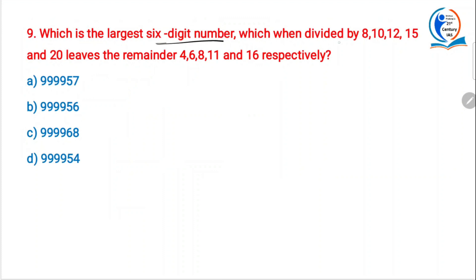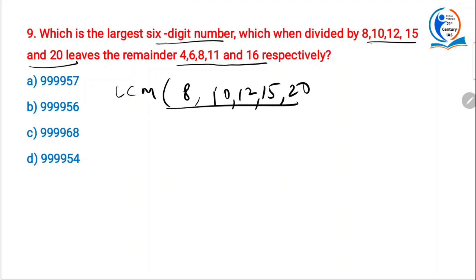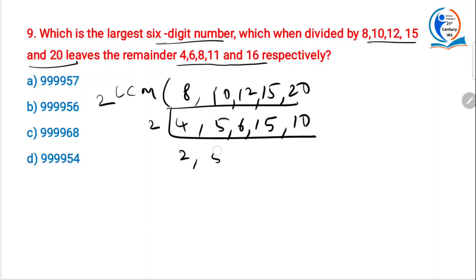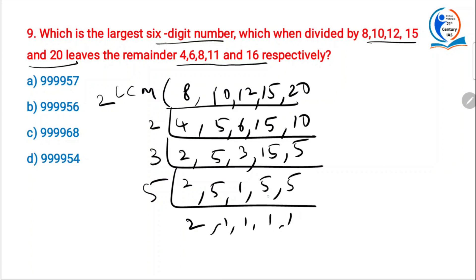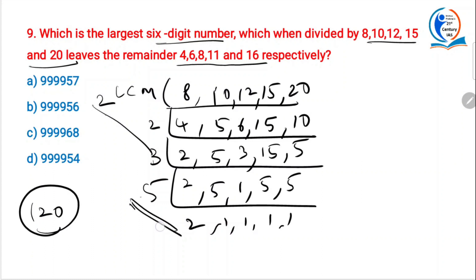Next: which is the largest 6-digit number which when divided by 8, 10, 12, 15 and 20 leaves remainders 4, 6, 8, 11 and 16 respectively? LCM of 8, 10, 12, 15 and 20: factorizing — find 5 and 2 first to make 10, then multiply the rest: 3×4=12, 12×10=120. LCM is 120. The largest 6-digit number is 999999. Divide 999999 by 120 — the remainder is 39.